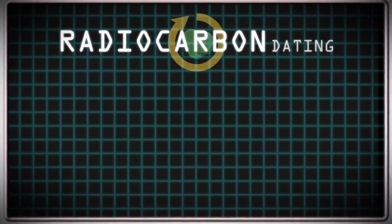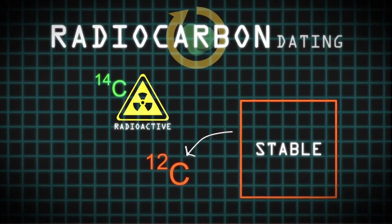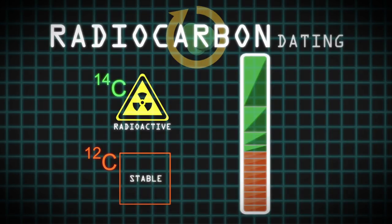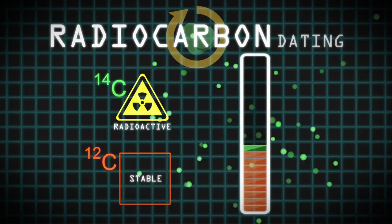Radiocarbon dating measures the ratio of radioactive carbon-14 to stable carbon-12 in an organic artifact like wood or bone. The method assumes how much carbon-14 was present when the tree or animal died, and how fast carbon-14 decays, in order to calculate how old something is.